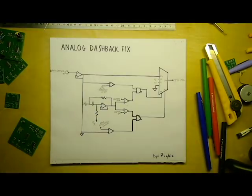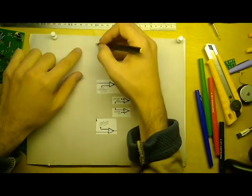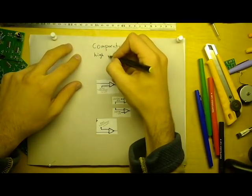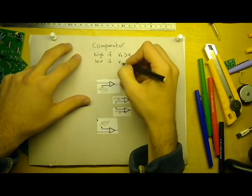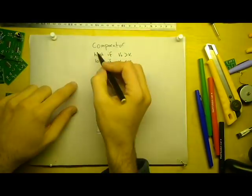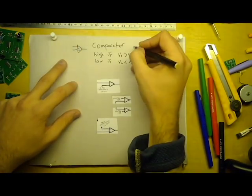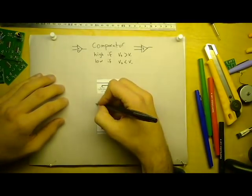Next we're going to be looking at the circuit's four comparators. Comparators are super simple. They have two inputs and one output. If the non-inverting input, denoted by a plus sign, is greater than the inverting input, or minus sign, then the output will be high. If it's lower, then the output will be low.